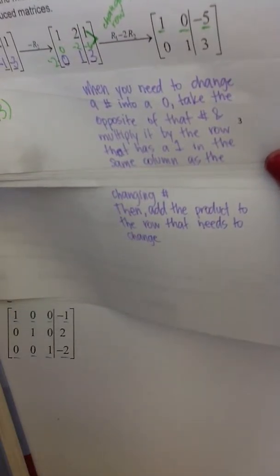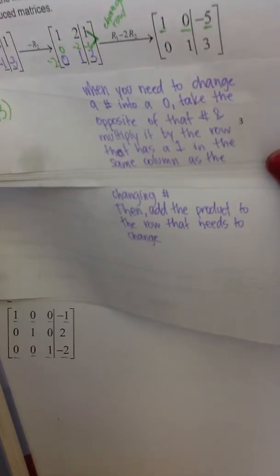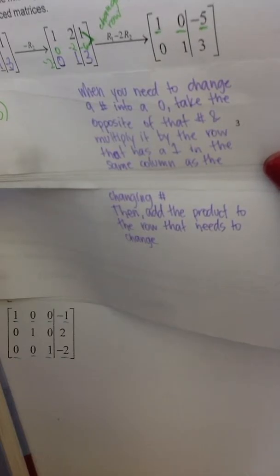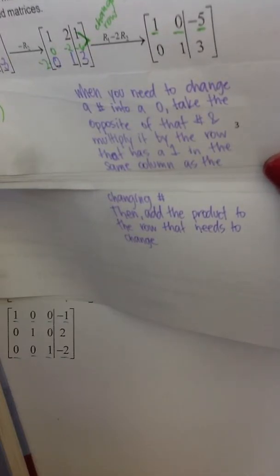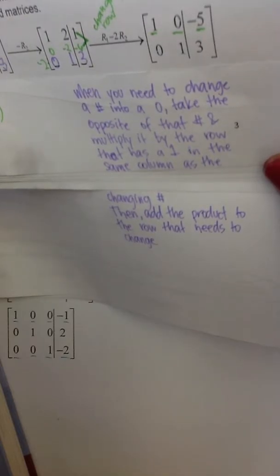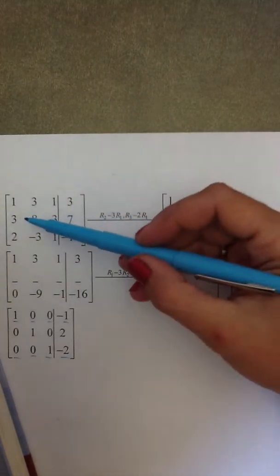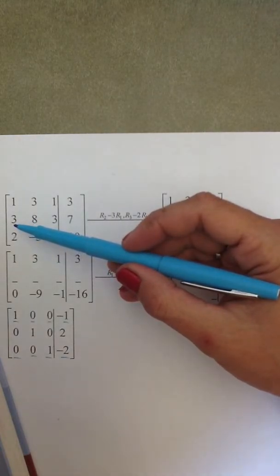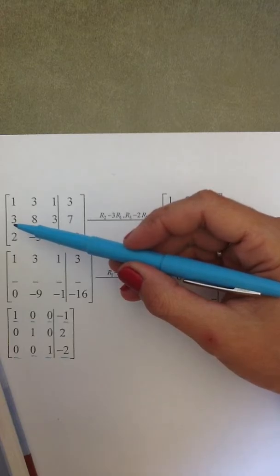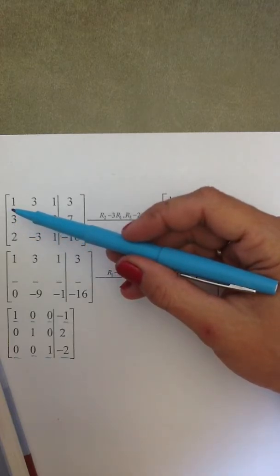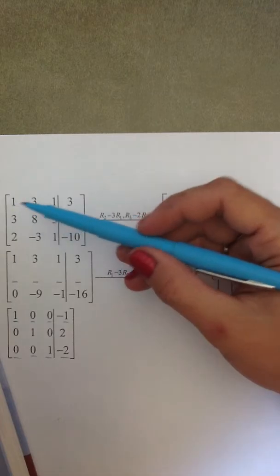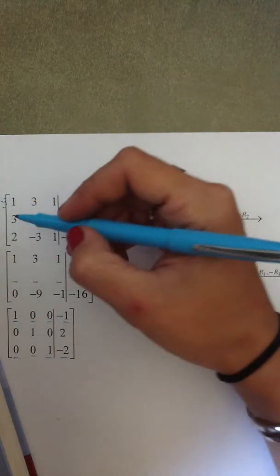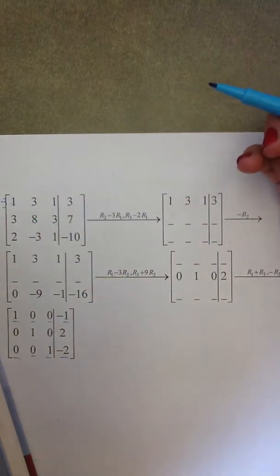When you need to change a number into a zero, take the opposite of that number and multiply it by the row that has a one in the same column as the changing number, then add the product to the row that needs to change. When we look at this three, it needs to be a zero. The opposite of three is negative three, so negative three needs to be multiplied by row one.